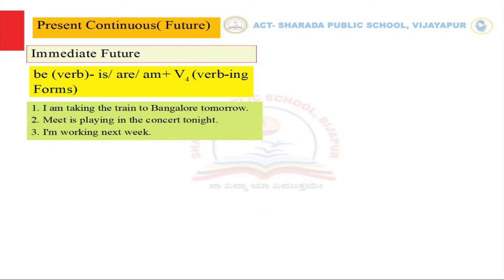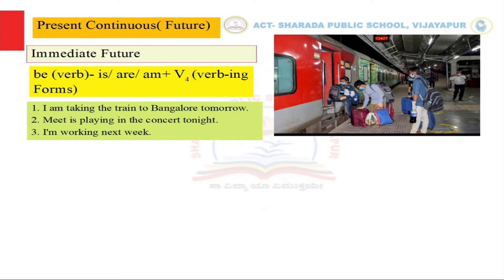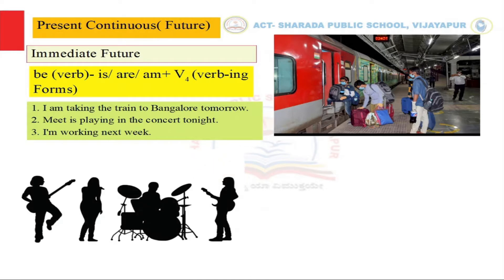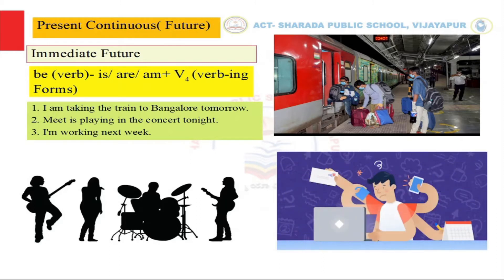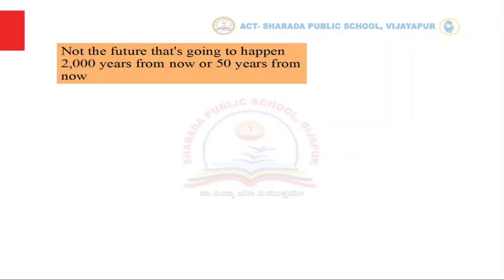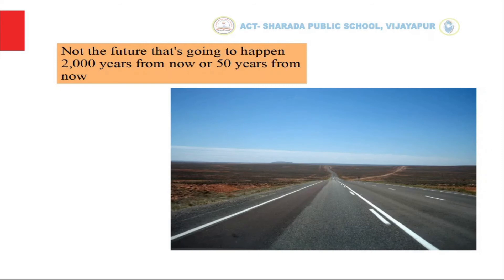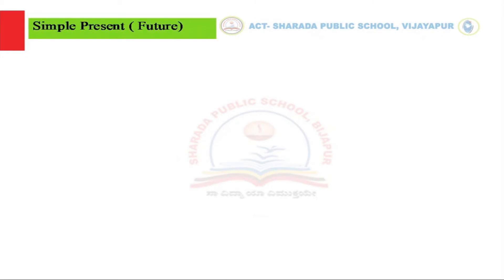For example: 'What are you doing tomorrow?' — 'I am taking the train to Bangalore tomorrow.' 'What is Meet doing tonight?' — Meet is a musician, so 'Meet is playing in the concert tonight.' 'What are you doing next week?' — 'Next week I am working.' Present continuous is very common when talking about the future that is going to happen soon — not 2000 or 50 years from now, but in the next couple of days.